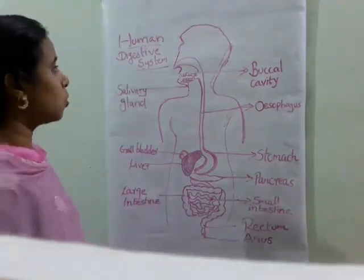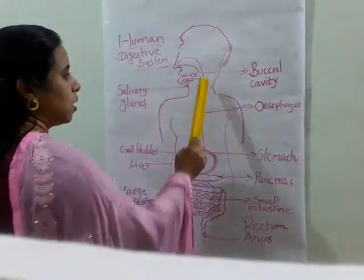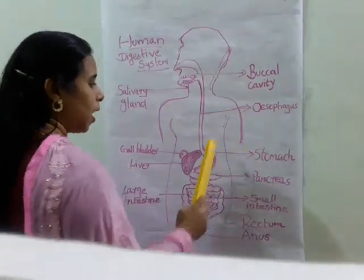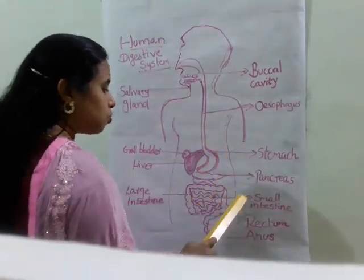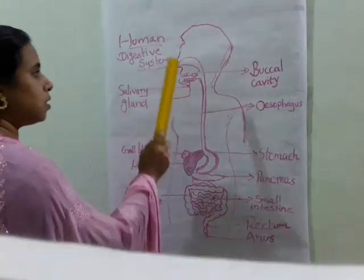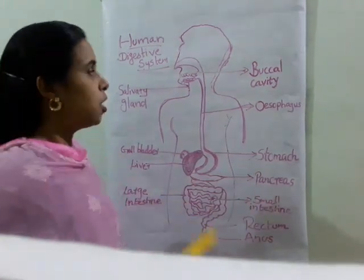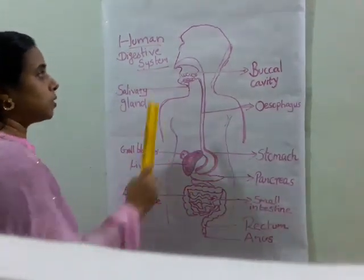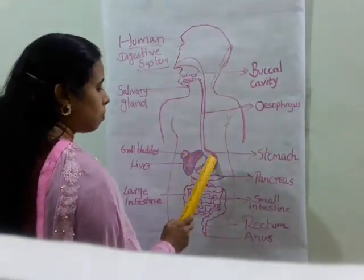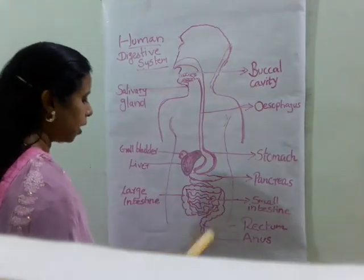The human digestive system includes the buccal cavity — another name is mouth — then the esophagus, also called the food pipe, and then the stomach, small intestine, large intestine, rectum, and anus. These are the main parts of the human digestive system.